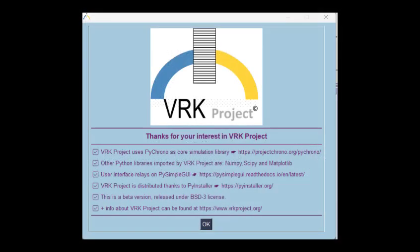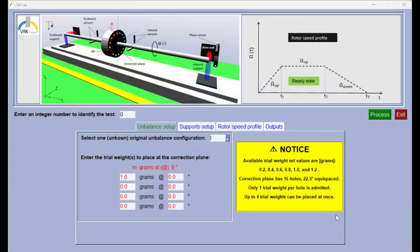Let's now run the software to do our example. This is the first window that we see when we run the software. We apply OK. The second window is the setup window. We have four tabs here. The first tab allows you to put a unbalance at the system. For the first run, we want to measure the unbalance as is. So we will put zero for the drive weight.